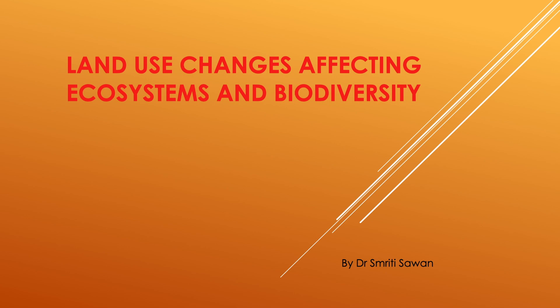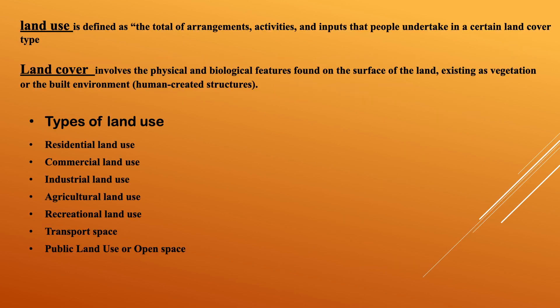The topic is Land Use Changes Affecting Ecosystems and Biodiversity. Land use is defined as the total of arrangements, activities and inputs that people undertake in a certain land cover type. Land cover involves the physical and biological features found on the surface of the land, existing as vegetation or the built environment — human-created structures.